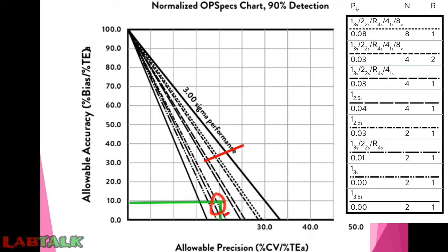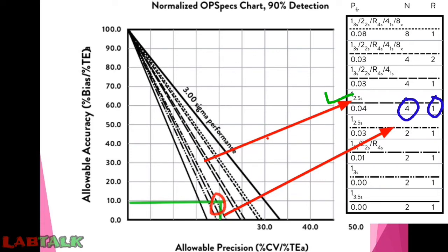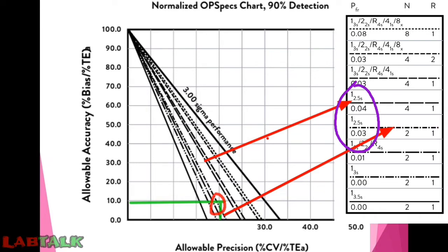The operating point falls between two lines. As per the first line, the number of controls required is 4 and the number of runs required is 1, with a probability of false rejection of 0.04 or 4%. For the second line, the number of controls required is 2 and the number of runs required is 1, with a probability of false rejection of 0.03 or 3%. For both cases the rule followed is 1:2.5s — meaning one control measurement exceeds ±2.5s limits as a rejection rule. Similarly, for other analytes the operator specification point can be plotted and the QC runs, controls, probability of false rejection, and rules can be found using the key.